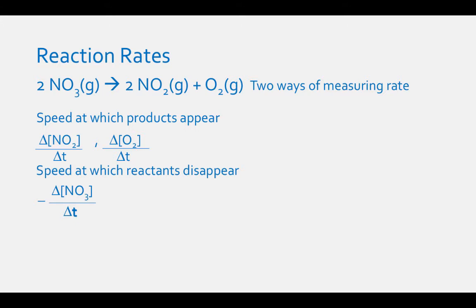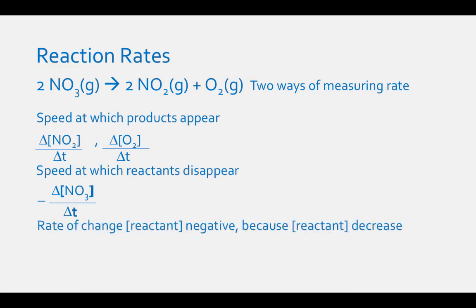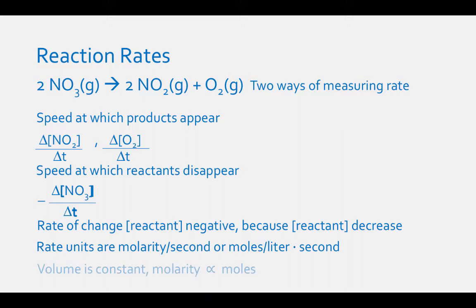We will represent a substance concentration with brackets around that substance. In these equations, time is represented by a lowercase t. The rate of change in the concentration of a reactant, delta concentration per delta time, is negative because reactant concentrations decrease as a reaction proceeds. The most useful unit to use for rates is molarity per second, or moles per liter times second. Since the volume is constant, molarity and moles are directly proportional.